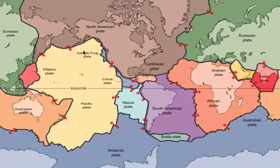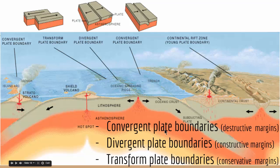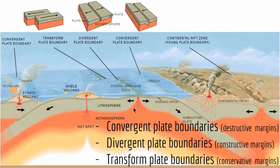Let's look at this in more detail. Between two plates, we have either convergent, divergent, or transform plate boundaries. In a convergent plate boundary, two plates are colliding or destroying each other — it's called a destructive margin. In a divergent plate boundary, two plates are getting away from each other. And in a transform plate boundary, two plates slide past each other.